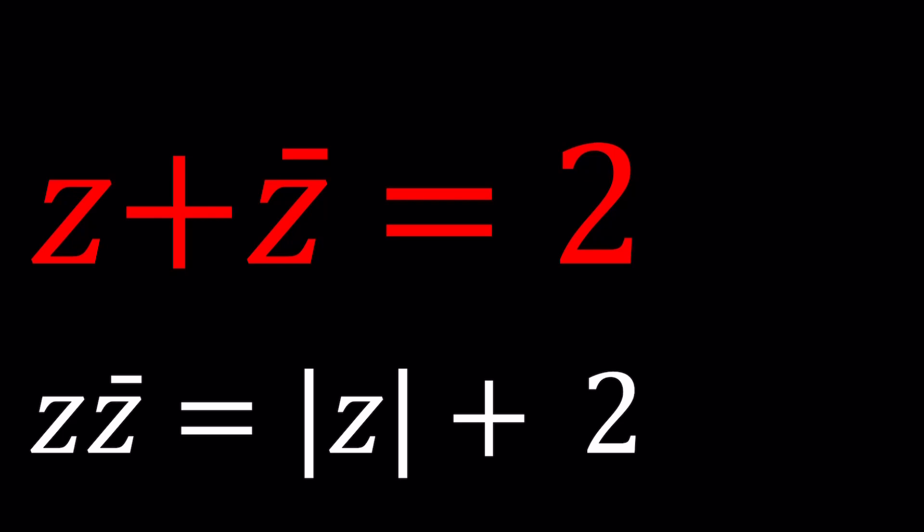The first equation gives us that z plus z bar is equal to 2. Z bar is the complex conjugate of z. And the second equation gives us a product, and then the absolute value is involved. Here's one thing to keep in mind: What happens if you add a complex number and its complex conjugate? The second thing we need to talk about is how are the product of these two numbers related to their absolute values.